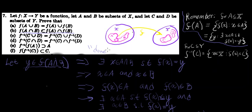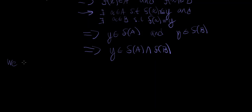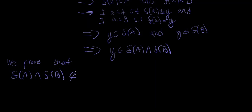Now we're essentially done with the first part. But we want to investigate further — you might be wondering why it's not true that the image of A under F intersect the image of B under F is a subset of the image of A intersect B. Let's go ahead and prove that F of A intersect F of B is not a subset of F of A intersect B.